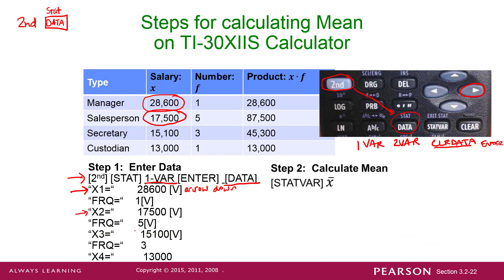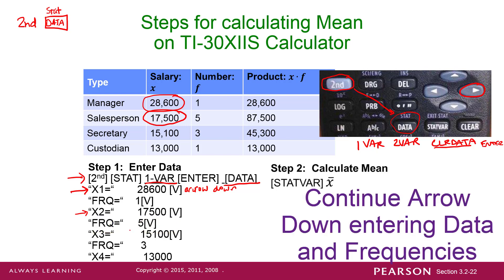Okay, now we're going to arrow down again. We're going to have X3 equals, and we're going to say 15,100 for our third salary. What do you think you do next? Arrow down — that's right. What's the frequency of 15,100? Three. So type 3 and arrow down.